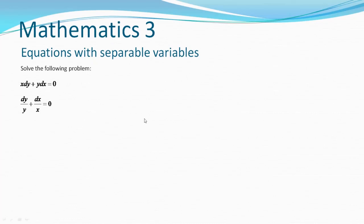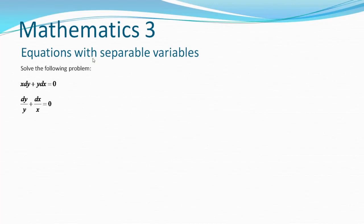Now we have it in the form of a function of y times dy plus a function of x times dx. If it's not obvious that this is standard form, we can rewrite it as one over y and one over x, which gives you the idea that the standard form is being presented. Then we introduce the integrals in both terms. If it's not obvious that these are standard integrals, we can rewrite it in more classical notation, but for elegant notation we'll keep it in compact form.